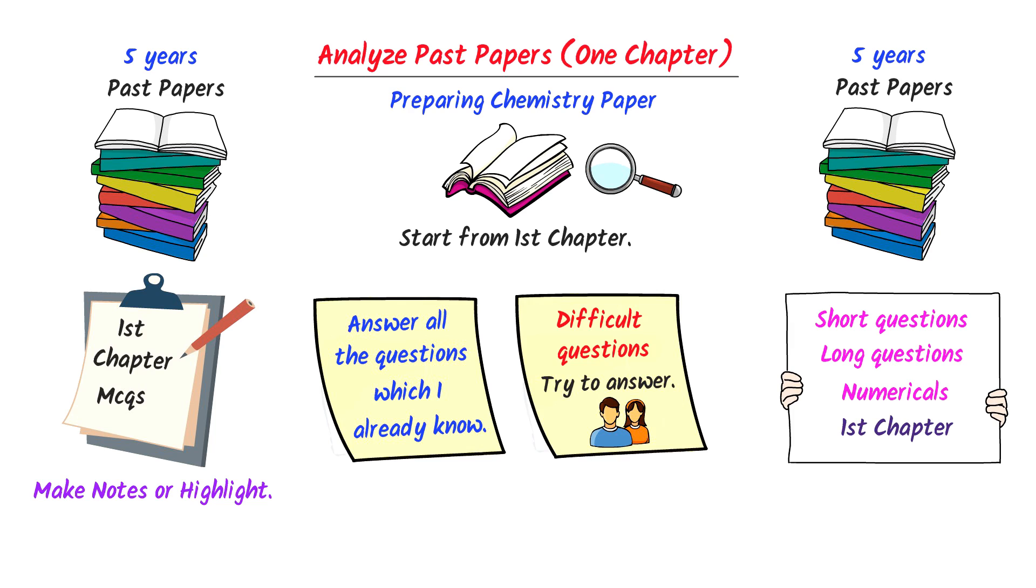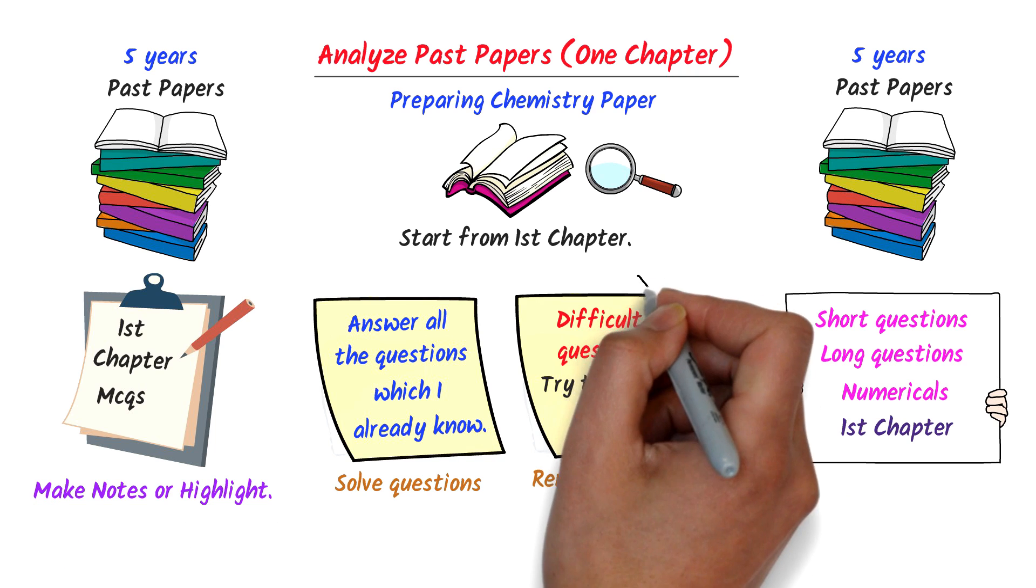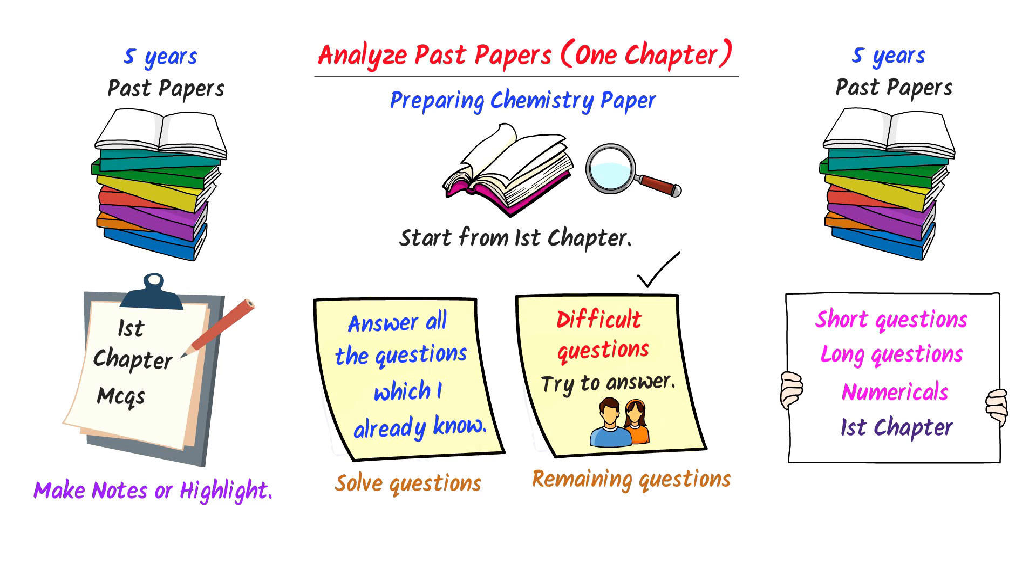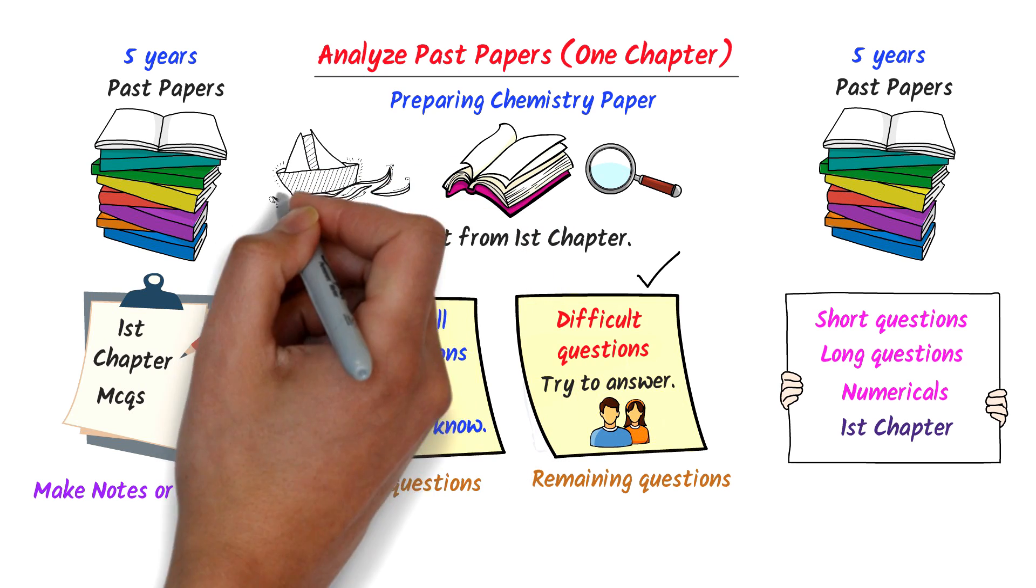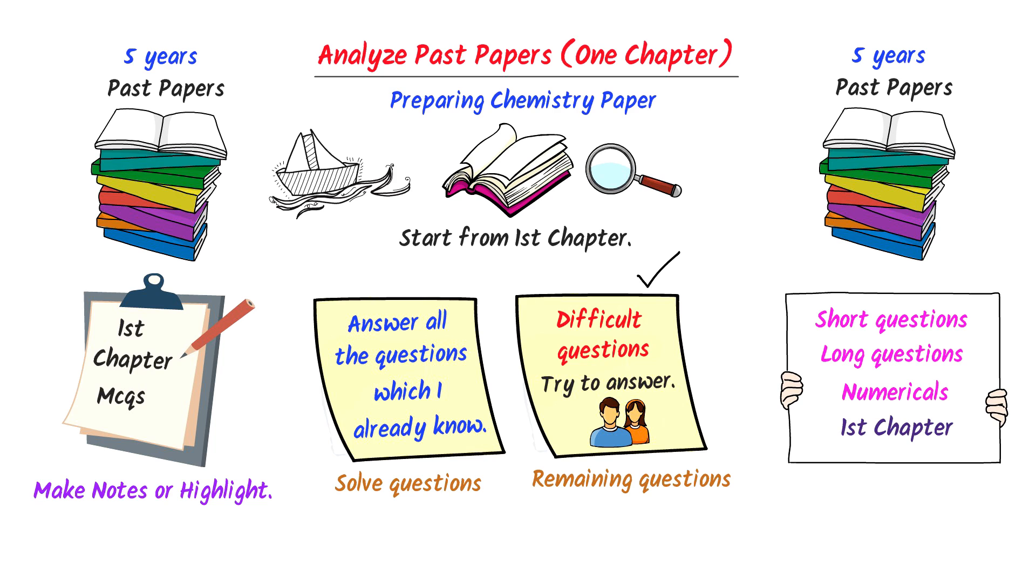Now, if I zoom out the first chapter, I exactly know my position about the first chapter of chemistry. For instance, I can easily count the questions which I solved using blue ballpoint or I can count the questions which I didn't solve using red ballpoint. Hence, I will not jump into the second chapter until I learn all the red questions which I do not know. Therefore, using this method of analyzing past paper for one chapter, I will complete all the chapters of chemistry one by one.